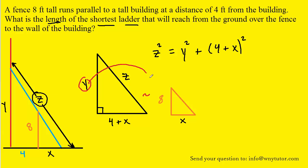we could say that Y is to 8 as 4 plus X is to X. So let's write that proportion right here. We can very easily solve this equation for Y by cross multiplying and then dividing both sides by X.